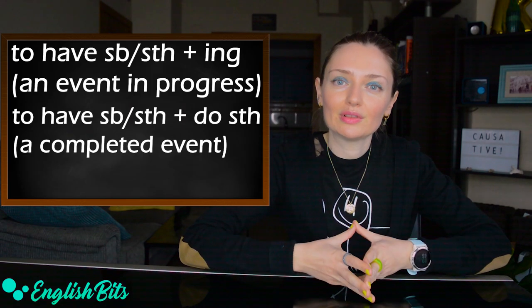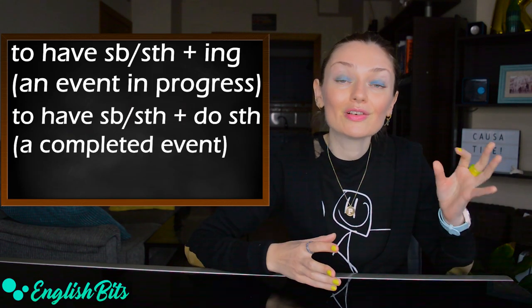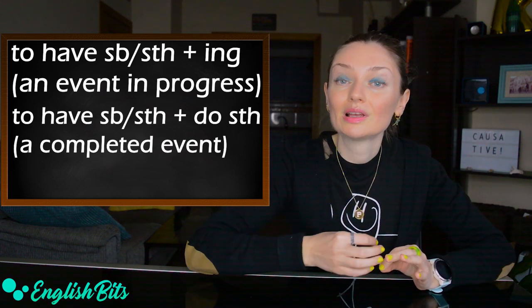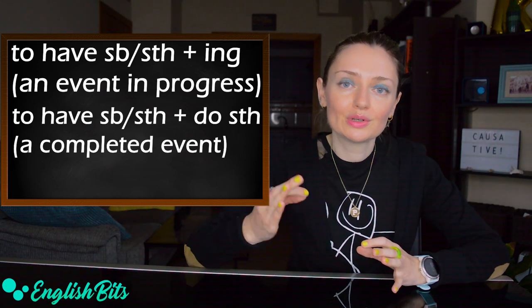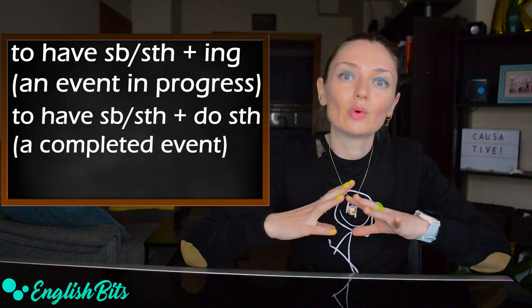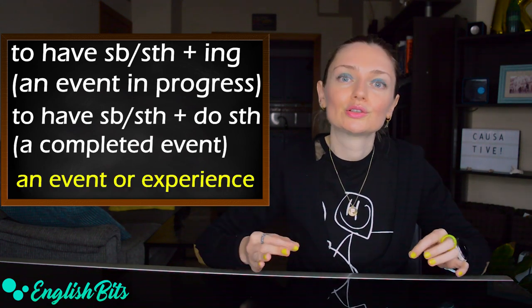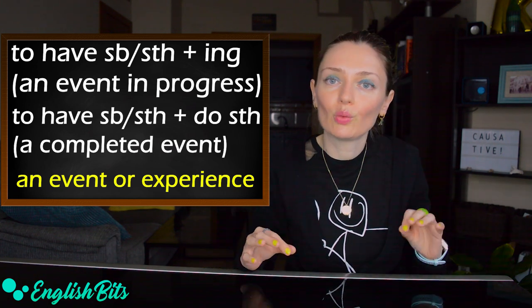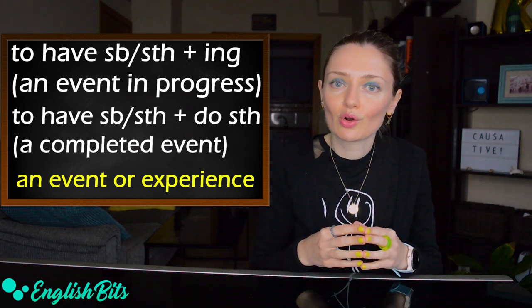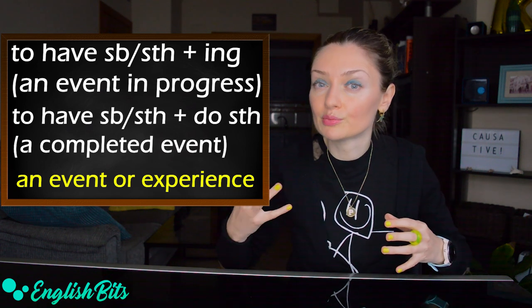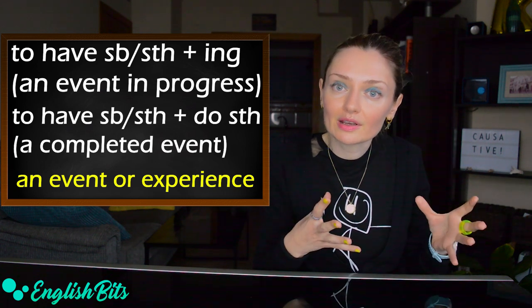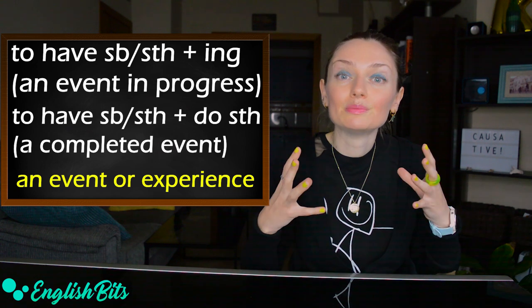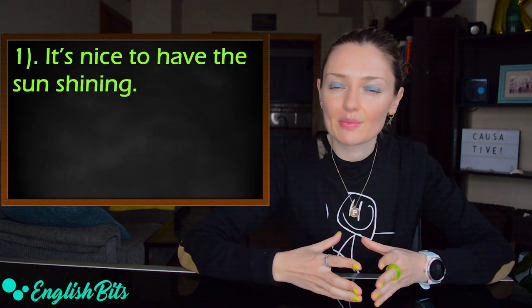And now let's move on to the last structure: to have something or someone doing something or do something, infinitive without to. We use it to talk about an event or an experience. We use ing to talk about an event in progress, and infinitive without to to talk about a completed event.